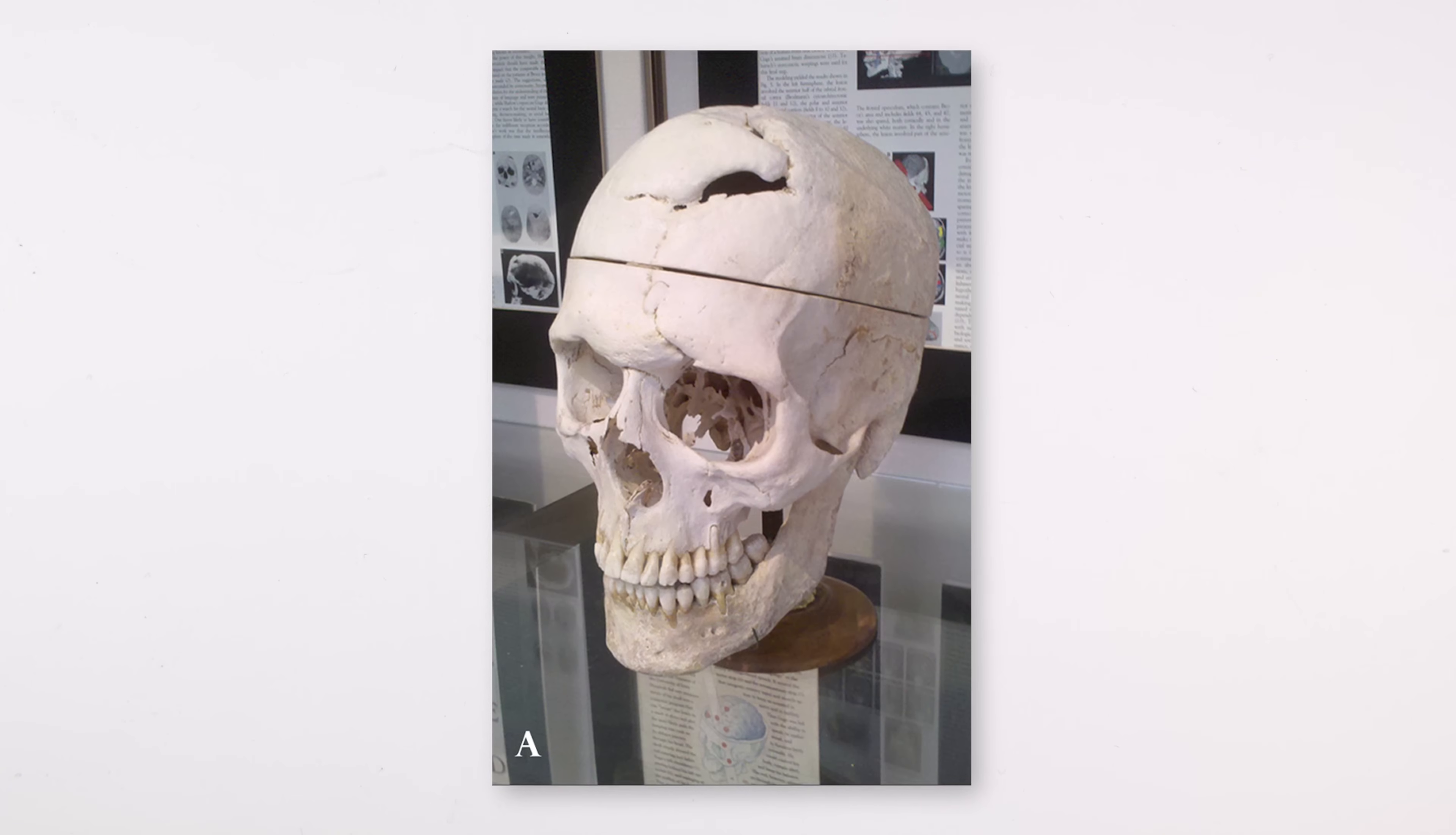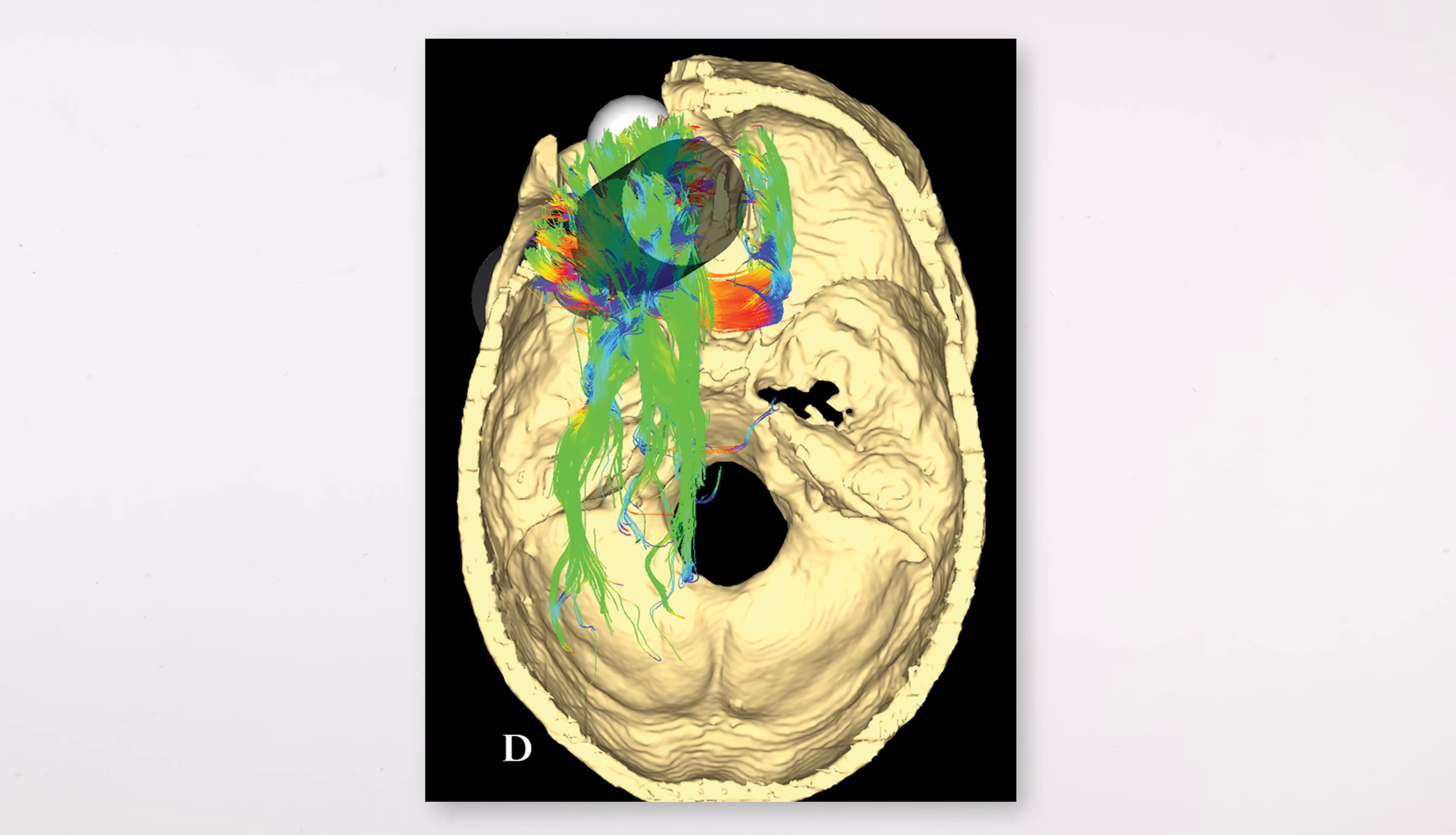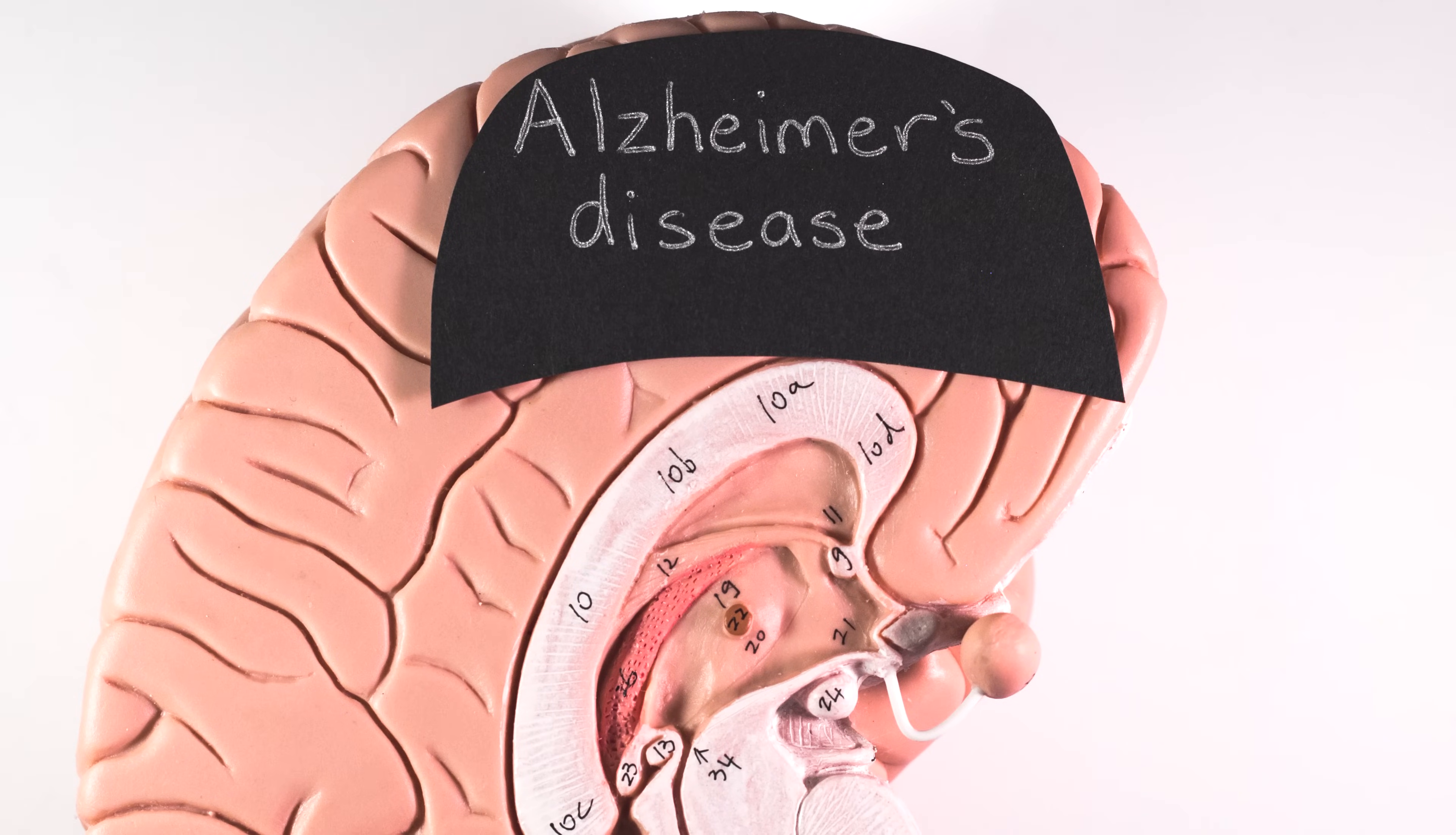And in 2012, researchers reconstructed scans of Gage's 189-year-old skull to show that most damage was to his frontal lobe. But the passage of the rod would have interrupted the connectivity of many different brain areas, making Gage's behavioral changes similar to those suffering from Alzheimer's disease.